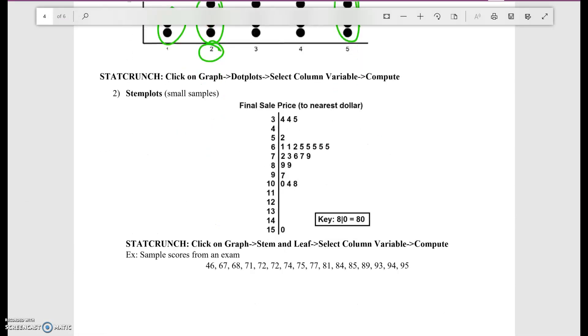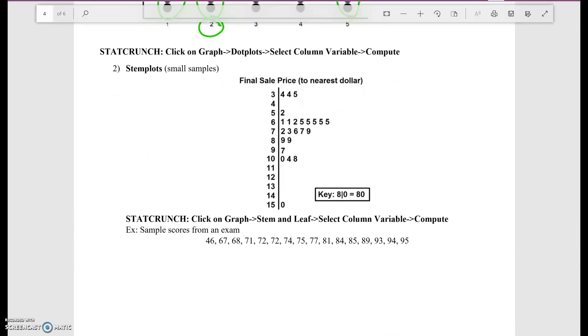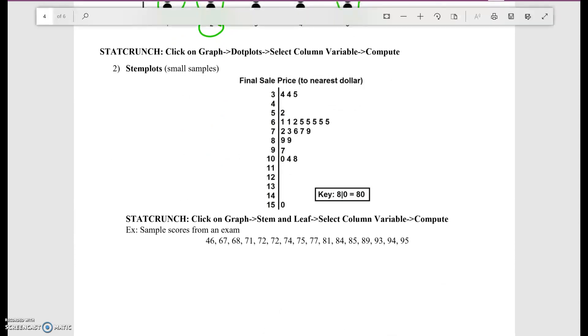Another way that you can do it is with stem plots. Now stem plots are also with small samples. The only thing about stem plots is that they can be crude to figure out. I gave you an example of it. These are also called stem and leaf plots.